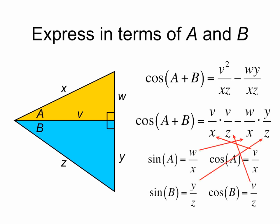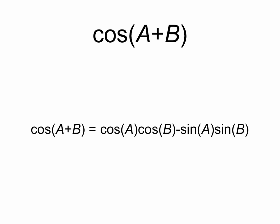So if we plug these in to our equation for cosine of a plus b, we get the final simplification, that the cosine of a plus b is equal to the cosine of a times the cosine of b minus the sine of a times the sine of b.